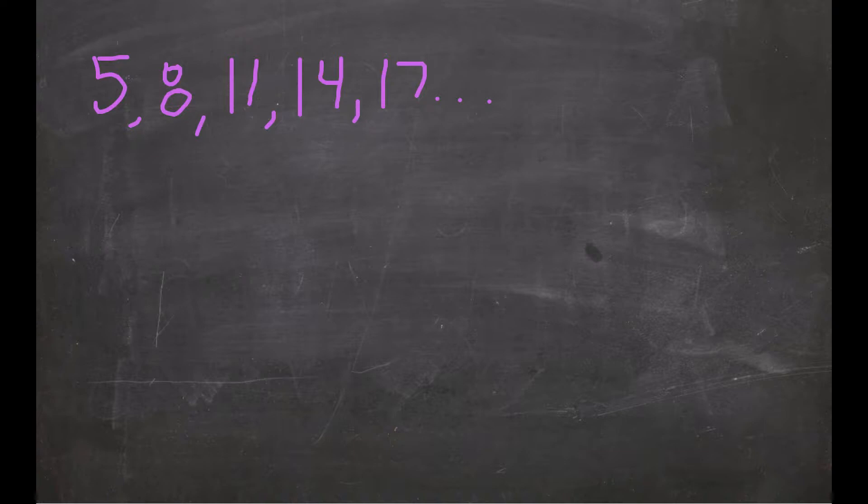From 5 to 8, there's a difference of 3. So then I'm going to check, do all the other values from one sequence term to the next have a difference of 3? 8 to 11 has a difference of 3, 11 to 14, difference of 3, so I'm seeing a pattern. The sequence generator is 3, so I see that I have a difference of plus 3.